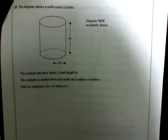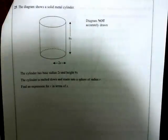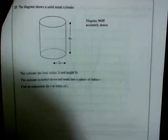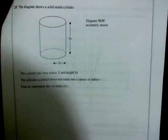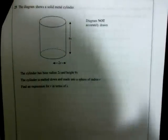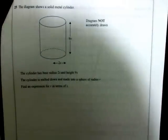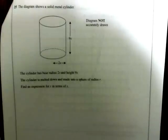Question 25 tests your algebraic skills. We've got a cylinder with a base radius of 2x and a height of 9x. It's going to be melted down and made into a sphere of radius r. We need to find the expression for r in terms of x.